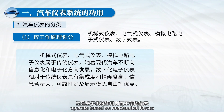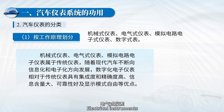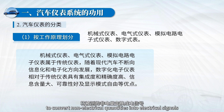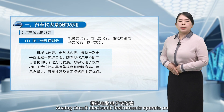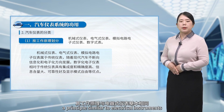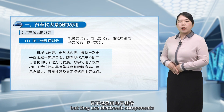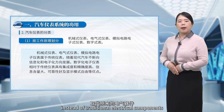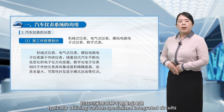Mechanical instruments operate based on mechanical forces. Electrical instruments function on the principle of electrical measurement, using various sensors to convert non-electrical quantities into electrical signals for measurement. Analog circuit electronic instruments operate on a principle similar to electrical instruments, but they use electronic components instead of traditional electrical components, typically utilizing various specialized integrated circuits.